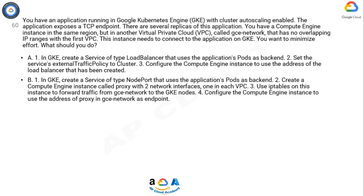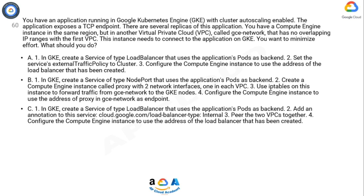Option B: In GKE, create a service of type NodePort that uses the application's pods as backend. Create a Compute Engine instance called proxy with two network interfaces, one in each VPC. Use iptables on this instance to forward traffic from gce-network to the GKE nodes. Configure the Compute Engine instance to use the address of proxy in gce-network as the endpoint.